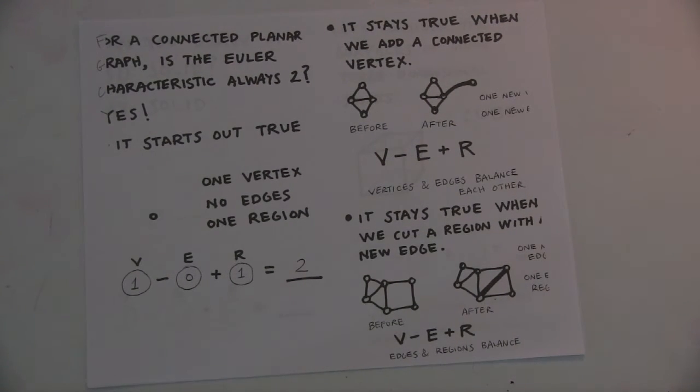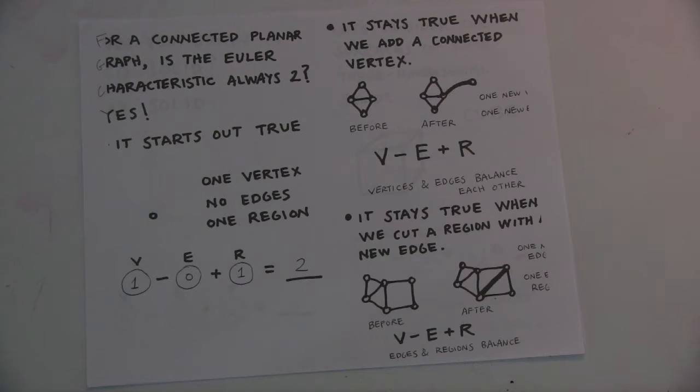For a connected planar graph, is the Euler characteristic always 2? Yes. It starts out true.